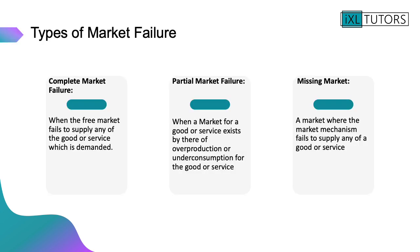There are two different types of market failure. The first is complete market failure, which happens when the free market fails to supply any of the good or service which is demanded. For example, if the market was left to itself with no government intervention, there would be complete market failure in the market for streetlights — they would not be provided by private firms or individuals because there is no profit incentive to supply them.